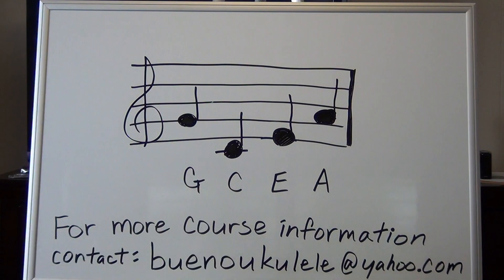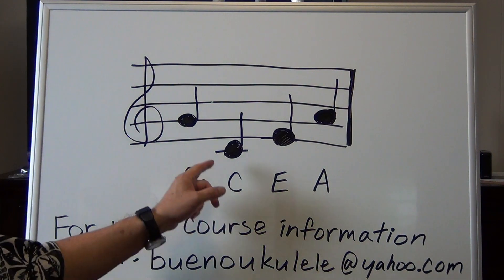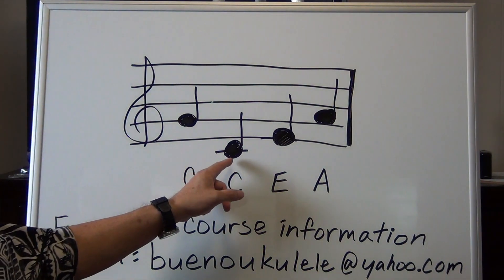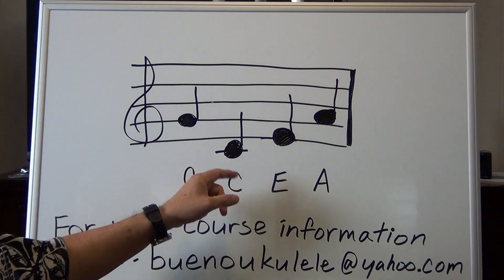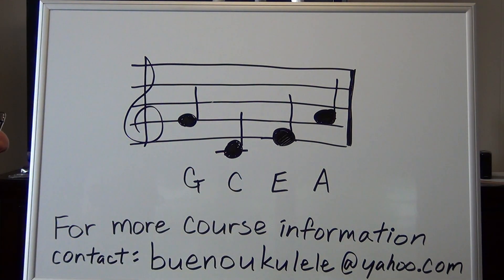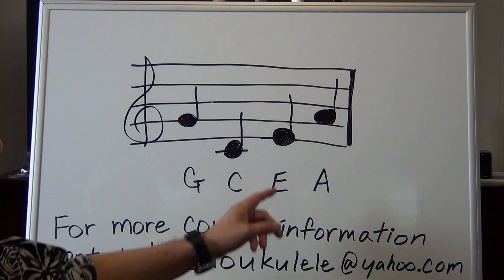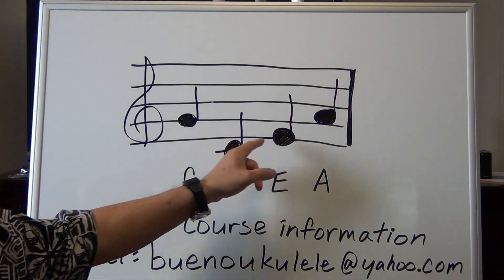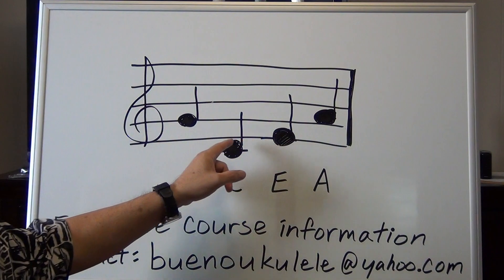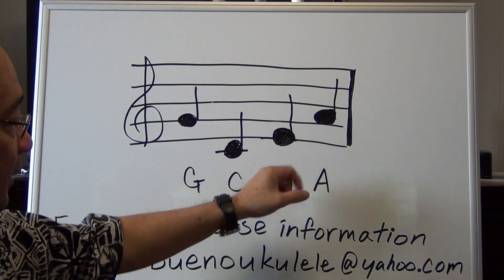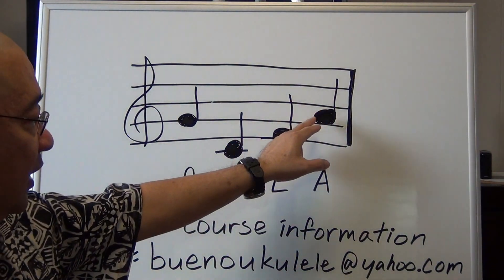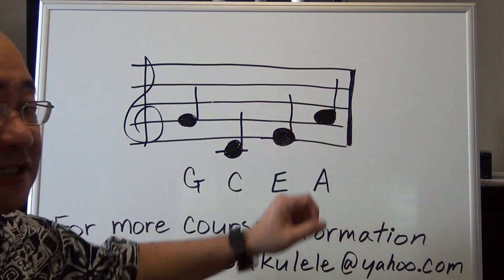By the way, the C note is middle C on your piano. So if you have a piano at home, that's what it is — middle C right there. Then the same goes for your last notes: E is actually on the bottom line, and A is located right on the second space.